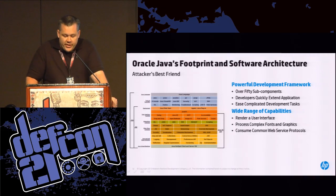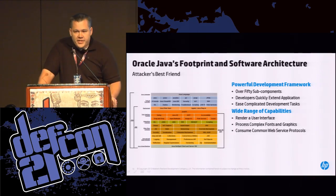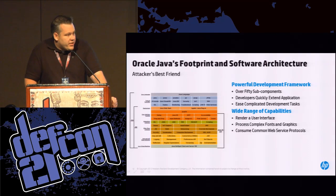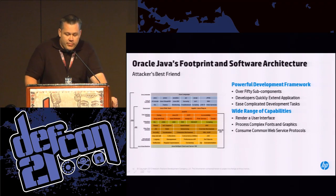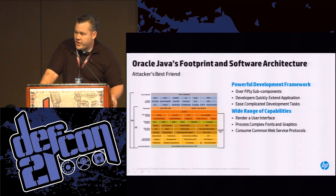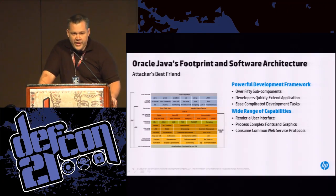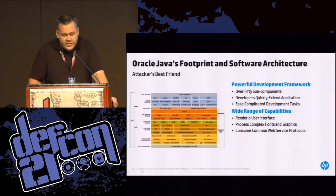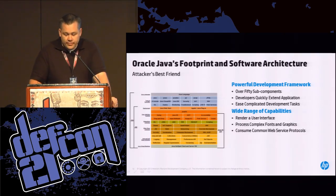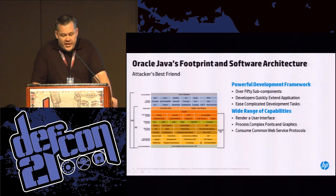Looking at the architecture itself, there are over 50 subcomponents — and that's what we're focusing on in this presentation: what are the most vulnerable pieces of this architecture. The deployment subcomponent consists of Java Web Start capabilities and the applet capabilities. Java FX is a set of APIs for creating and delivering rich Internet applications. Java 2D produces 2D graphics, and the library subcomponent — the actual lang and util components — provide the basic functionality for almost every application out there. This wide range of capabilities allows developers to quickly implement complicated tasks and deploy applications, kind of 'write once, run everywhere.'